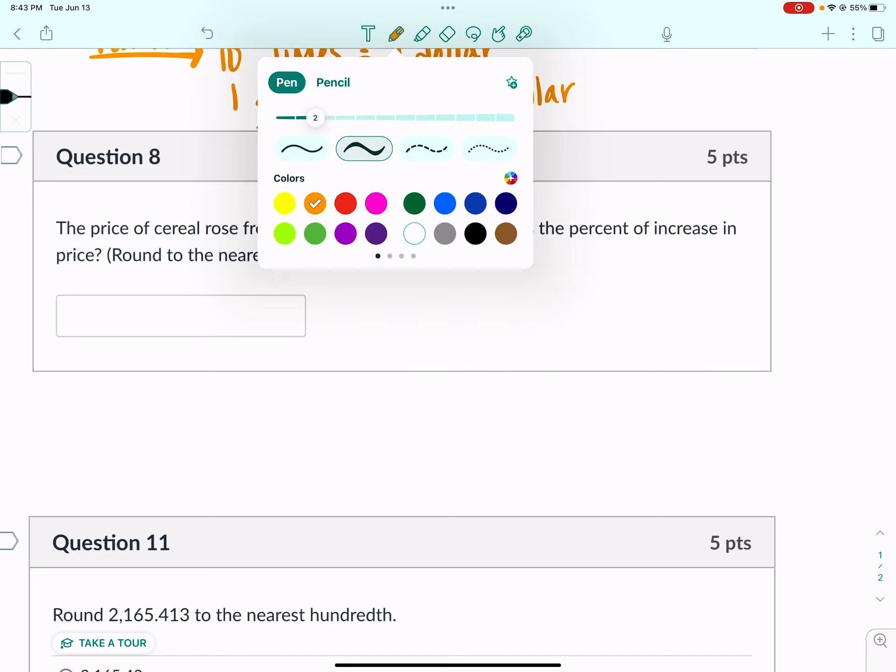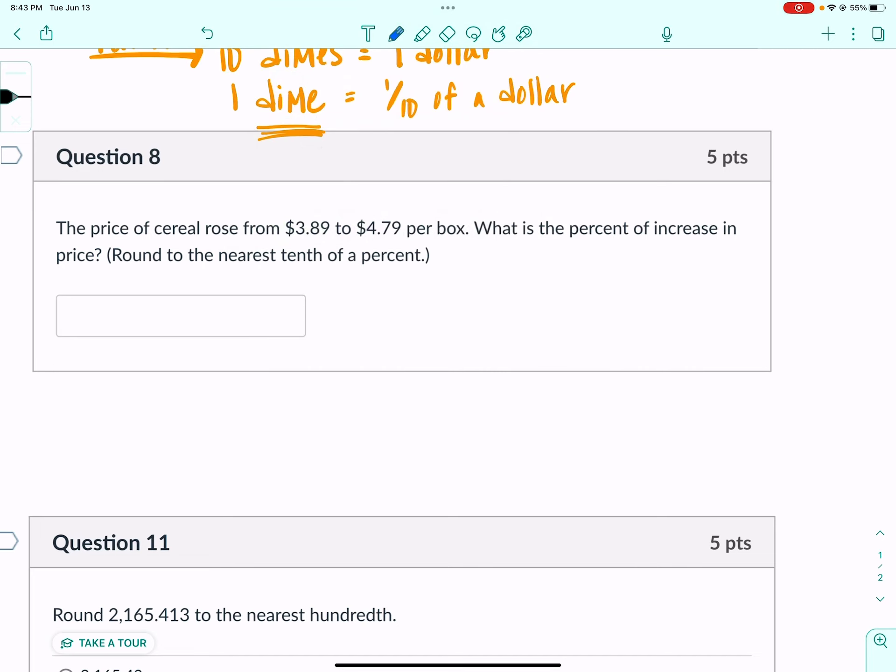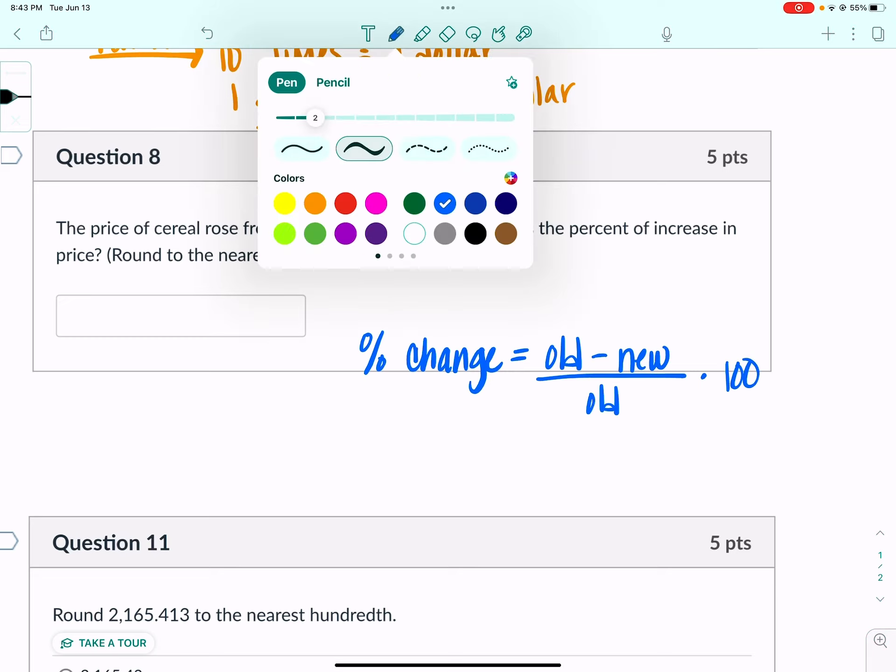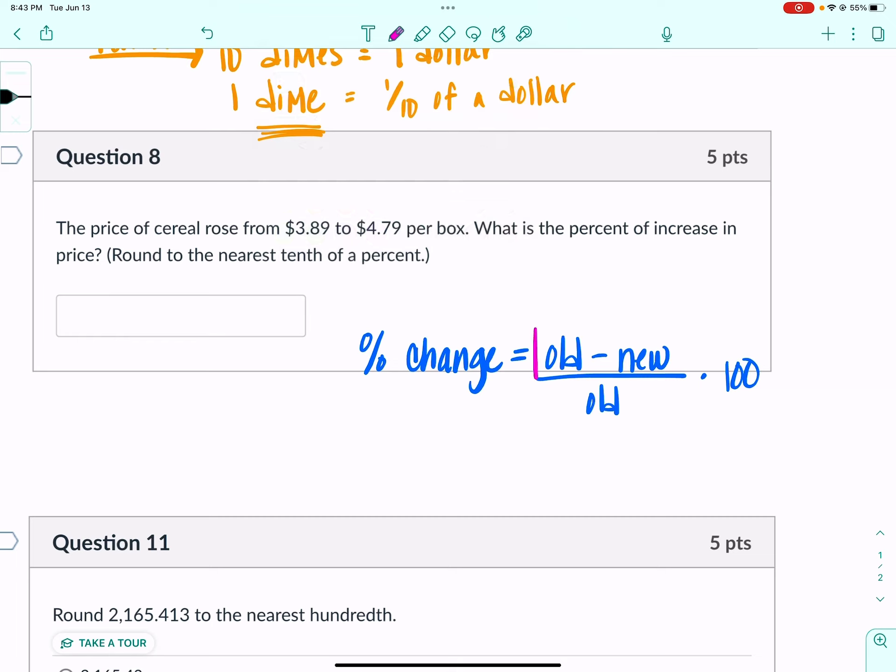The next one I noticed a pattern with was this idea of percent of increase or decrease. When you're looking for percent change, you want the new price minus the old price divided by the old times 100. Now what I'm going to do is I'm going to put absolute value bars on the top. Hold on, I need to switch these. This is new minus old.